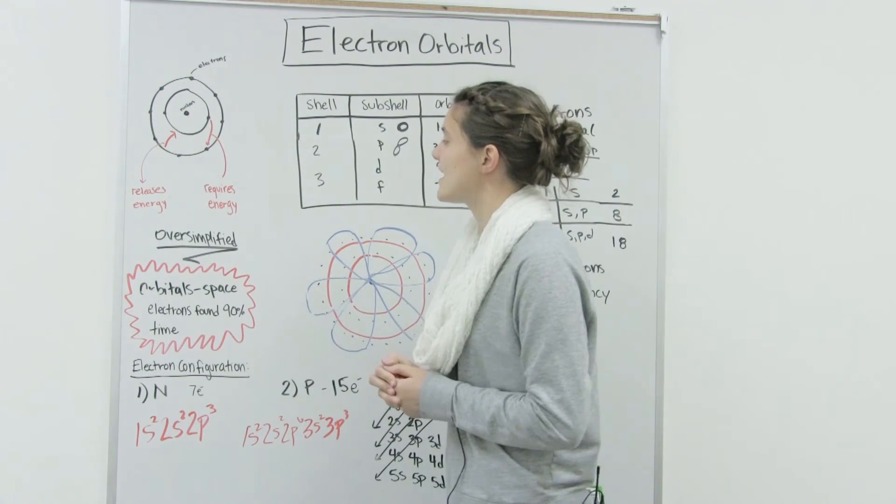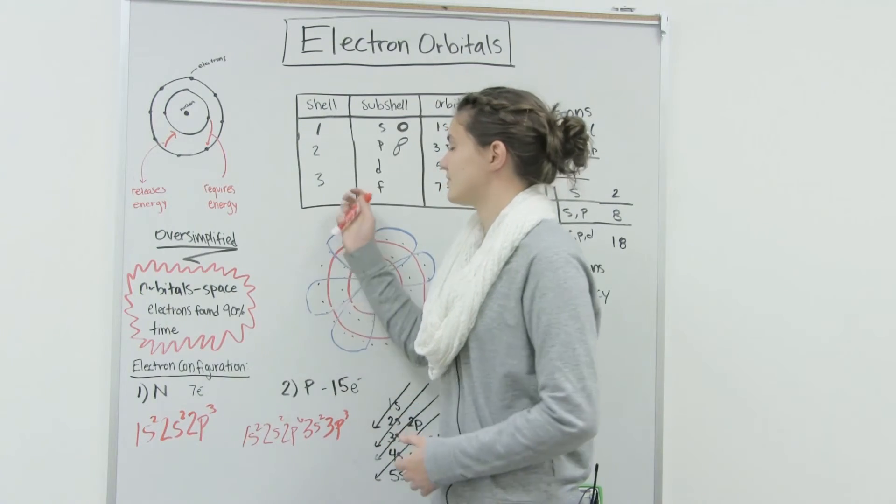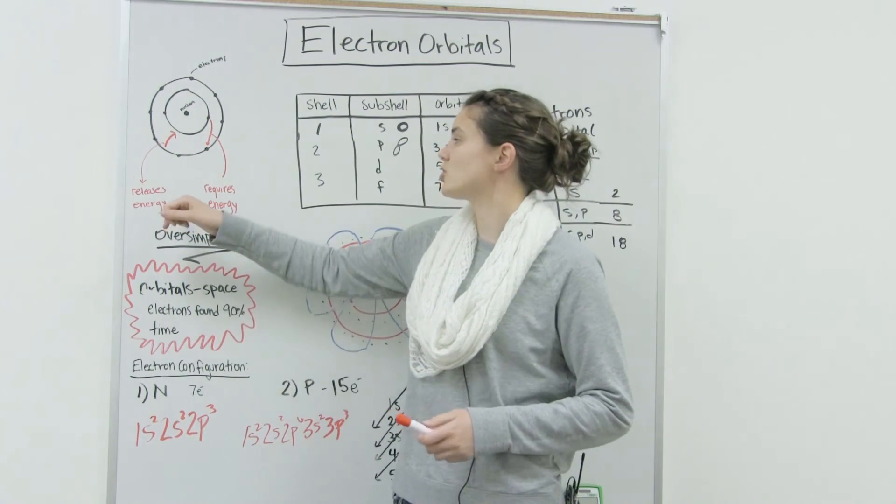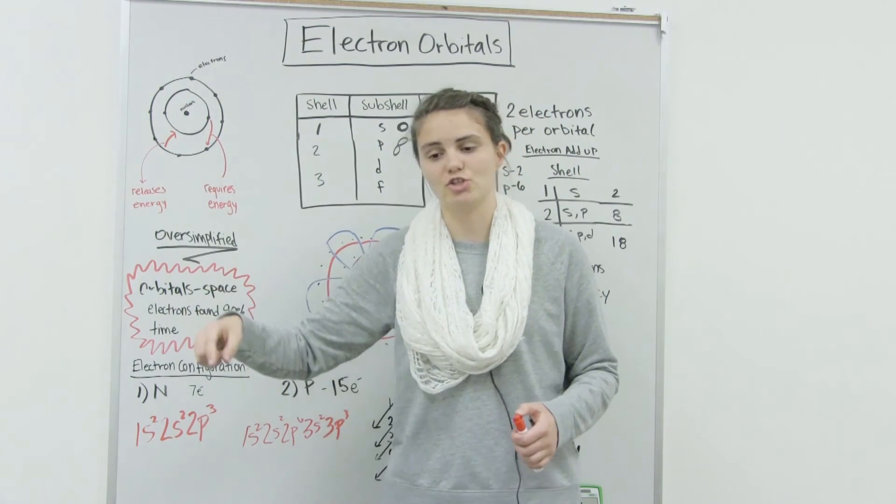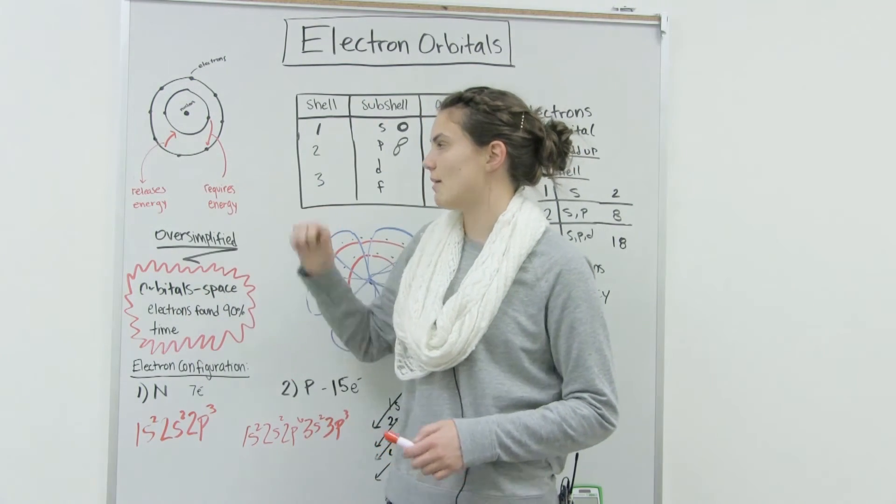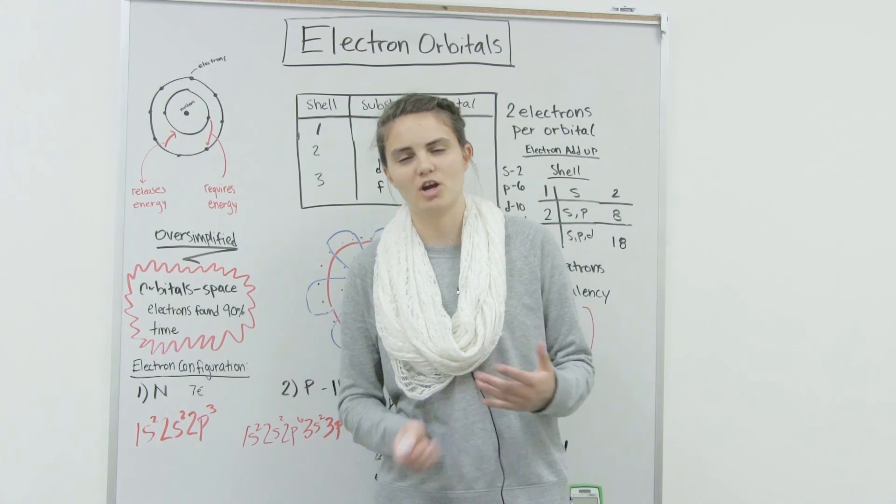The last thing I want to talk about is electrons jumping from different shells. So if an electron moves down to a lower shell, it's going to release energy. And if an electron jumps up to another shell, it's going to require energy. And that's going to be important for when you talk about photosynthesis.